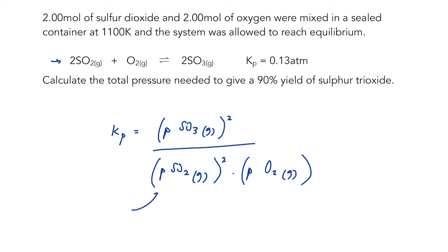To work out the partial pressure for each of these gases, I need to know the mole fraction, which means I need to know the number of moles of each of these substances at equilibrium. So that's the first thing that we're going to figure out.